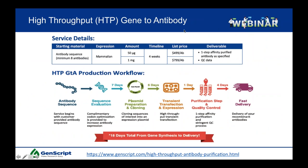Ellie also mentioned our high-throughput gene-to-antibody service — our accelerated service platform. The turnaround time for this is about four weeks. We deliver a one-step affinity-purified antibody, starting from your antibody sequence. The workflow includes sequence evaluation, plasmid prep and cloning, all done in-house, followed by expression, purification, and delivery.